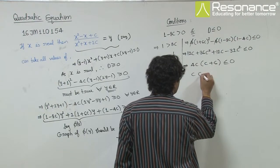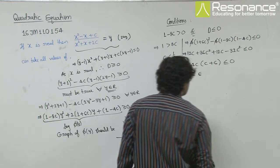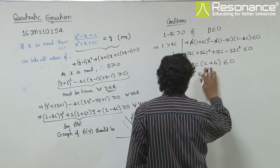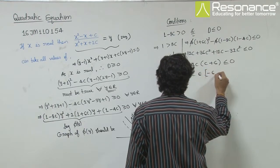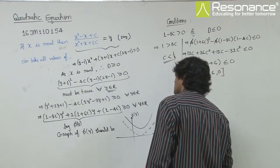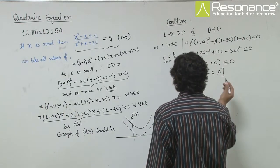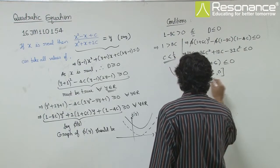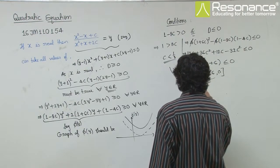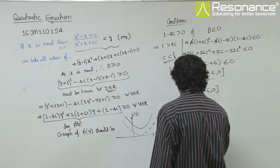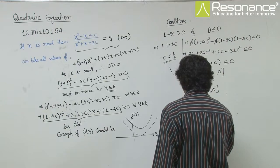So, drawing on the number line, we will get c belongs to minus 6 to 0. Now let's check the boundary points. Taking the intersection of these.